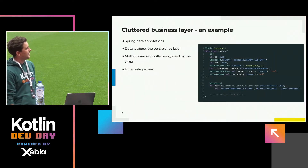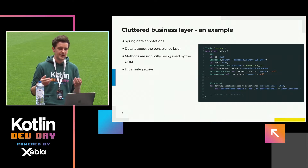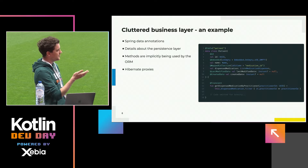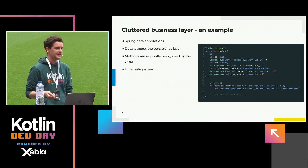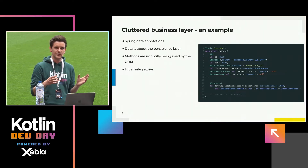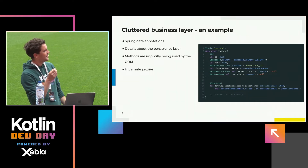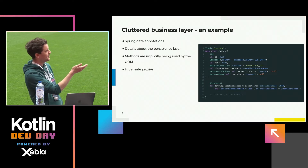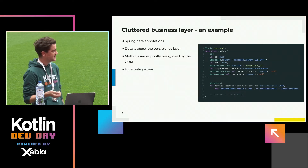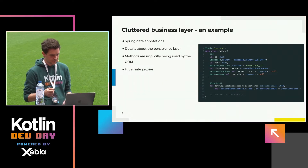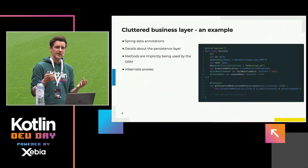Let's take a look at an example. What we see a lot is the persistence layer leaking up to the domain layer. Maybe you are using an object relational mapper — for example, Spring Data and JPA. This can be a domain class, but now it's cluttered with persistence layer information: the table name, which property is the ID in the database, the ID columns of the collections, where the joins should be. This information is needed for the ORM to work.